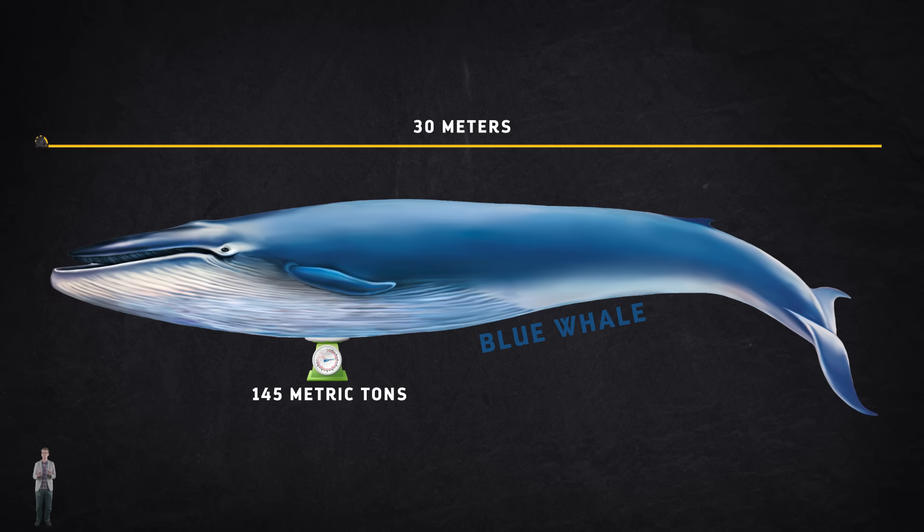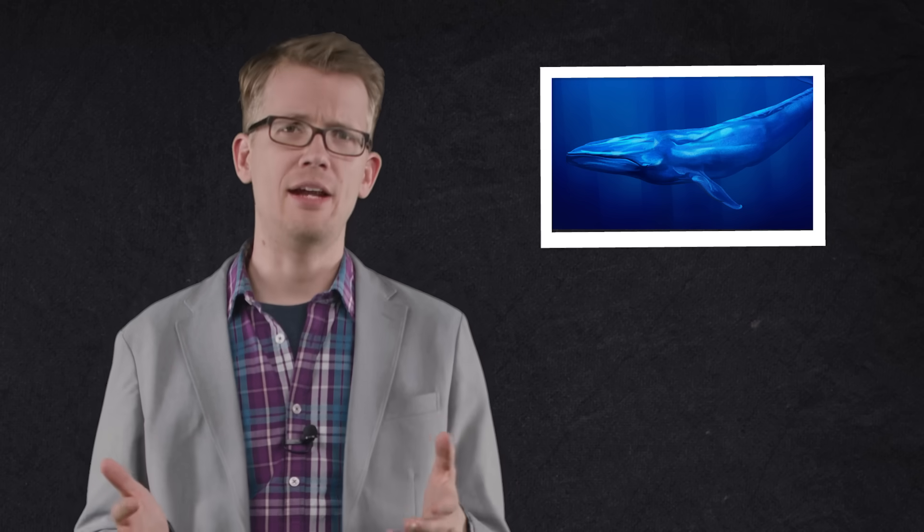To our credit, the most massive animal ever is, of course, a mammal: the blue whale. It can get up to 30 meters long and weigh as much as 145 metric tons, more than twice as heavy as the most massive known dinosaur. But to be fair, the rules of biomechanics are different in the water. Buoyancy and blubber can do amazing things, allowing sea creatures to grow to sizes that would be impossible on land.